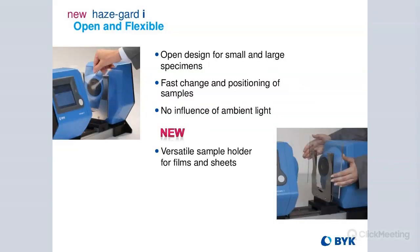The HazeGuard I is open and flexible. It has an open design for small and large specimens, which makes it much easier to use than some competitive instruments that require closed optics and a cover over the whole thing. With those, you have to set your sample in place and then set the cover in place, which takes a lot longer. The open design is very convenient for taking measurements quickly. There's no influence of ambient light, and there's a versatile sample holder for films and sheets.